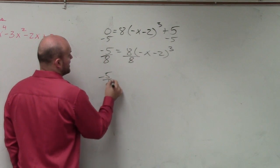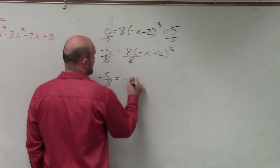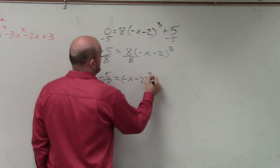Then I need to divide by 8. So I have negative 5 over 8 equals negative x minus 2 cubed.